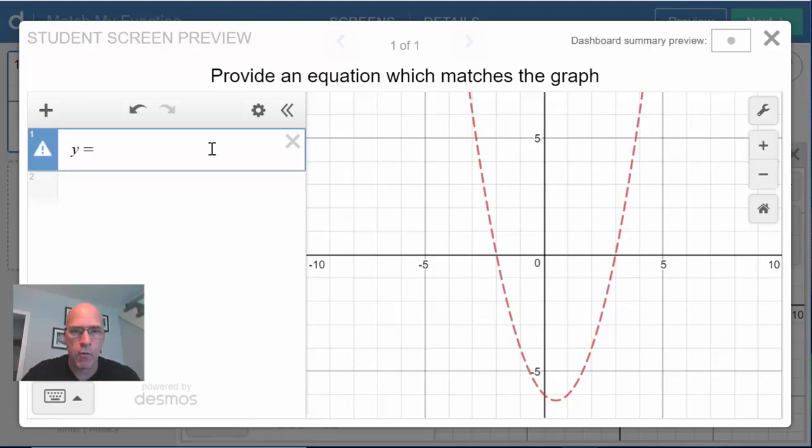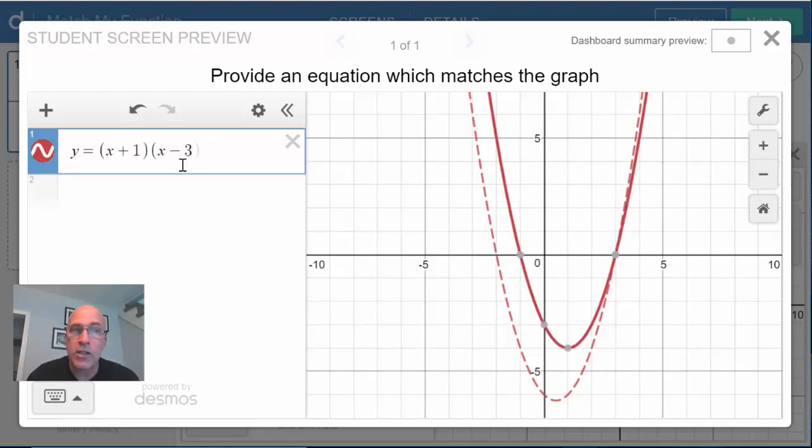So I, as a student, could try y equals, maybe it's x plus 1 times x minus 3. You can see, oh, I've got a piece of it here, so maybe I'm going to toy around and eventually figure out that this needs to be, what does it be, x plus 2. Now I know it's perfect. And I know I have it right because the equation goes over top of the dotted function.